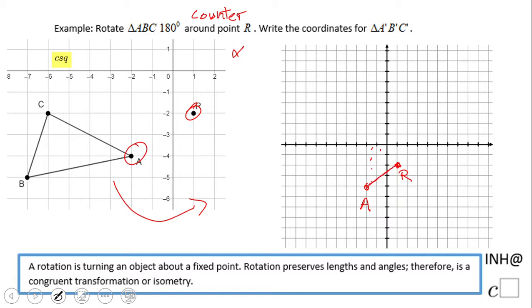This tells you that you should be on the other side somewhere here. Let me count the distance. Point A should be right here on the other side. Let's see what the coordinates are. A prime is (4,0).